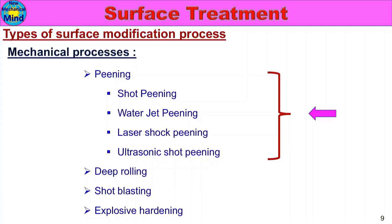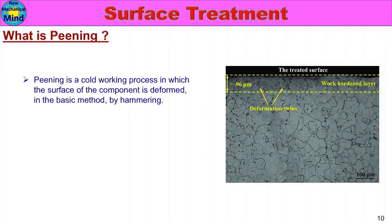Cold working processes — one piece heat from room temperature. Processes from cold working include: in the work piece, hammering. Hammering methods act on one part of the surface, causing plastic deformation.